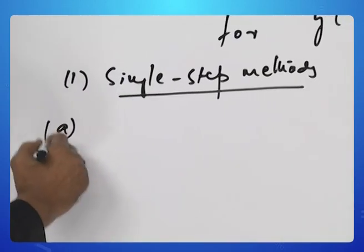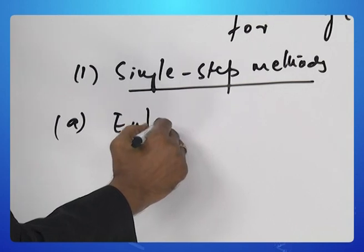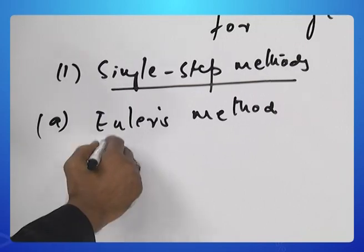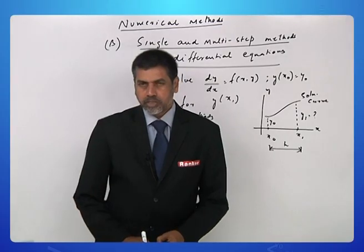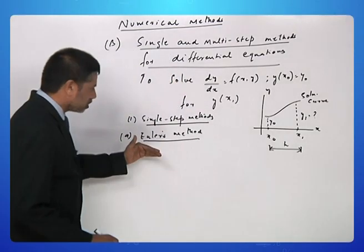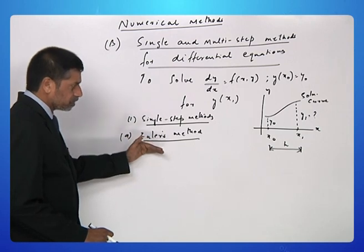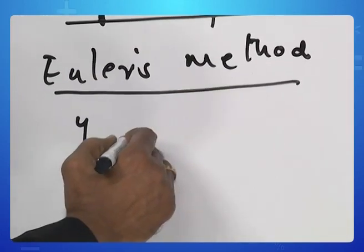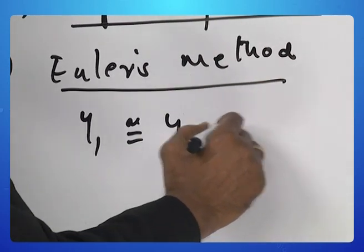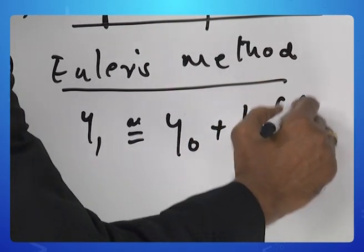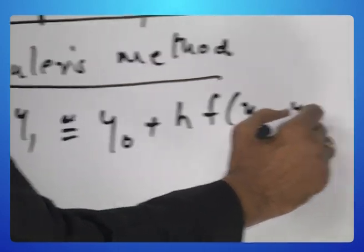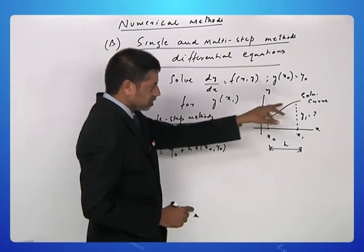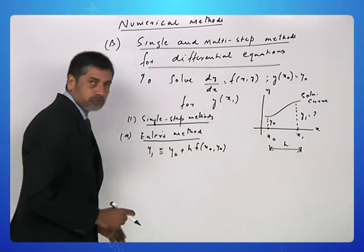We basically have the simplest method known as Euler's method, one of the simplest methods to estimate y1. y1 is approximately given by y naught plus h into f of x naught y naught. This is actually coming from a linear approximation of this curve. Therefore, it is not supposed to be very accurate.